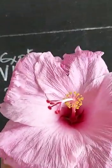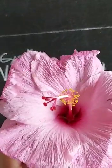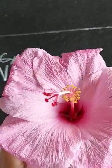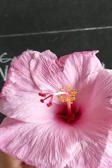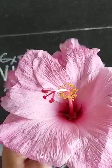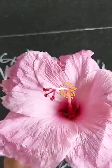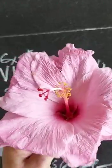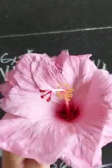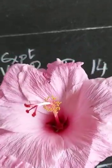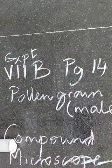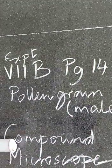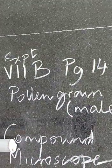Remember, the hibiscus flower is a bisexual flower. It has both the male and the female part in it, so it is called a bisexual flower. Now what are the parts of a compound microscope?